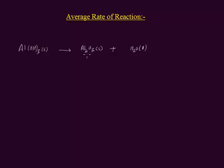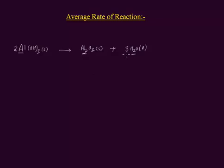We balance this equation. On the right side you can see there are two Aluminum atoms and on the left side there is only one Aluminum atom, that is why I put coefficient two here. Now Aluminum atoms are balanced. We balance hydrogen atoms — on the left side there are two times three, six hydrogen atoms, and on the right side there are three times two, six hydrogen atoms, that is why I put three here. Now hydrogen atoms are balanced.